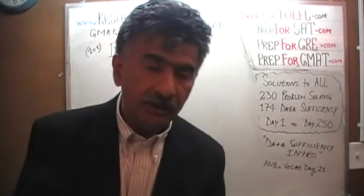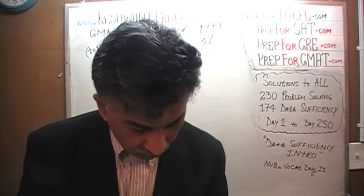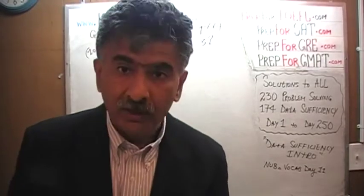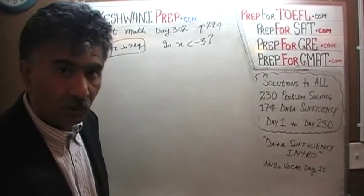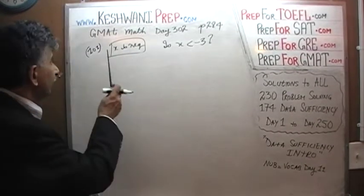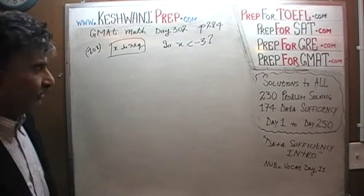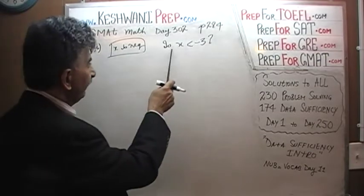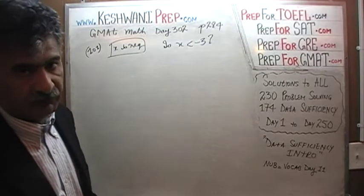Page number 284, the very first problem on the page — problem number 101. Let's see what it has to say. Problem number 101 is already on the blackboard. We are told that X is negative. The question simply is: is X less than negative 3? Well, let's find out.